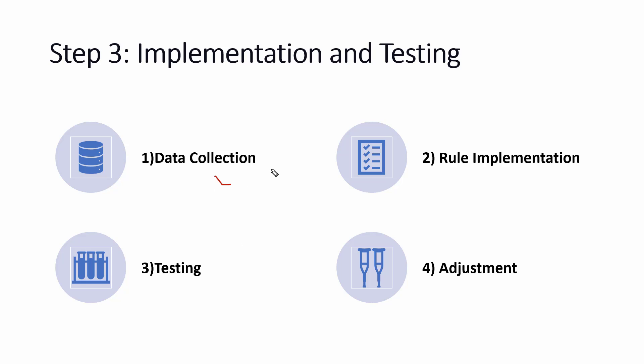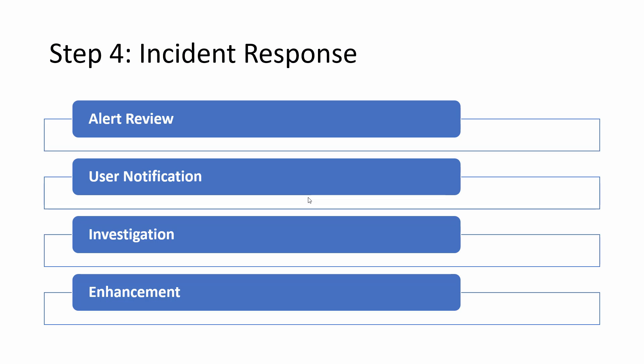According to the use case we set the rule; according to the use case we set the correlation rule. But for correlating we need to aggregate the data first. Once done, we move to implementation and testing. First step is data collection — ensure all relevant logs and data have been fed into the SIEM. Second is rule implementation — implement the developed correlation rules in the SIEM system. Third is testing — before deploying to production, we simulate scenarios to validate that correlation rules are triggering the desired alerts. If not, we adjust to reduce false positives.